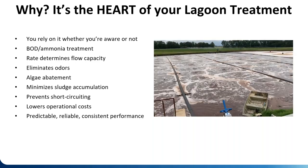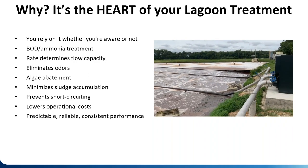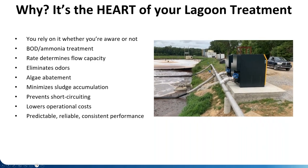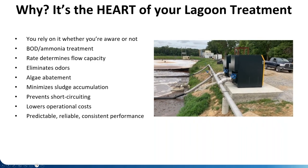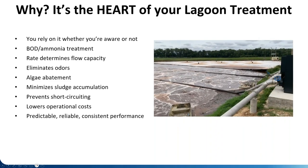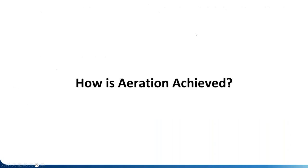Here's a video of an industrial animal rendering plant. They have some old surface aerators moved to the tail end and fine bubble aeration on the front end, with a couple of blowers on shore. This gives examples of aeration types we'll be discussing in later slides.